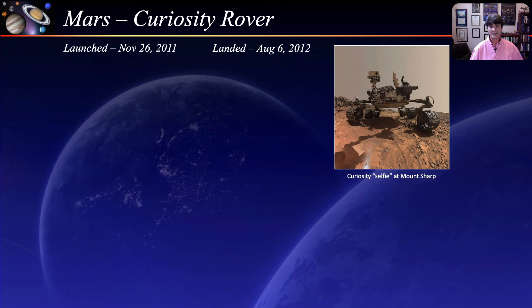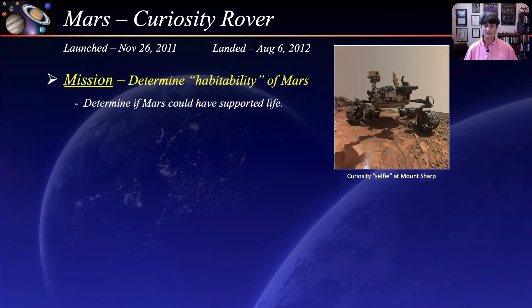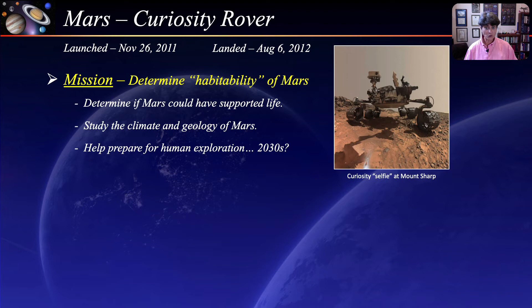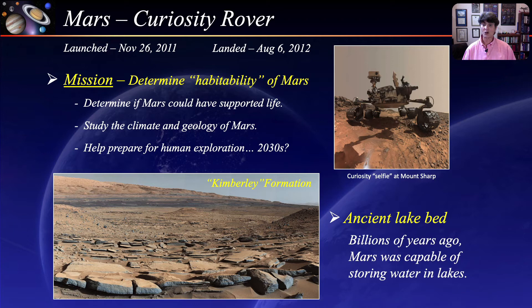Curiosity landed in the Gale Crater on Mars in August of 2012. Its main scientific goal is to determine the habitability of Mars, both past and future, by trying to determine if Mars could have supported life in any form. It will study the climate and geology of Mars and help prepare for future human explorations, possibly in the 2030s. This is a panorama taken by Curiosity of the Kimberley Formation — the strata in the foreground tip towards the base of Mount Sharp, indicating flow of water toward a basin, showing that billions of years ago, Mars was capable of storing water in lakes.